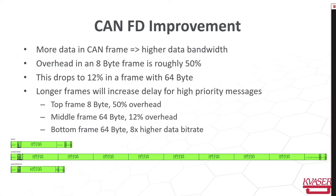The biggest improvement with CAN FD is that you can send more bytes in each frame. The overhead in an eight-byte classical frame is roughly 50 percent, but by increasing up to 64 bytes the overhead is only 12 percent. The longer frames will of course make delays for other messages. As shown in the figure, the top frame is eight bytes with 50 percent overhead, the middle is 64 bytes where overhead stays at 12 percent, and by increasing the bit rate you can shrink the time for information transport.